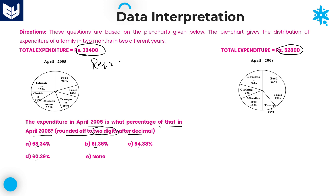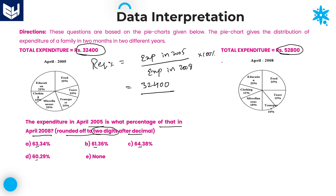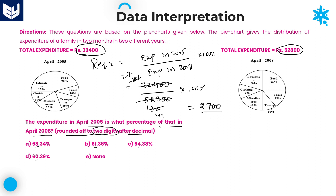What is our required percentage? Expenditure in 2005 is what percentage of expenditure in 2008? Using the percentage formula: 32,400 divided by 52,800, into 100. Cancelling two zeros, you can cancel with the 4 table — 4 into 81 times, 4 ones, 4 threes, 4 twos — and the 3 table: 3 into 27 sevens, 3 into 44.